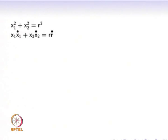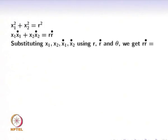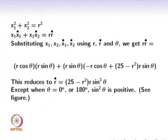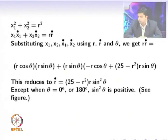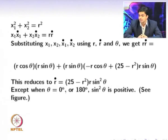Differentiating x1² + x2² = r² with respect to time gives x1·x1_dot + x2·x2_dot = r·r_dot. Substituting the expressions for x1_dot and x2_dot from the state equations and canceling common factors, the equation reduces to r_dot = (25 – r²)·r·sin²θ. Except when θ = 0° or θ = 180°, sin²θ is always positive.